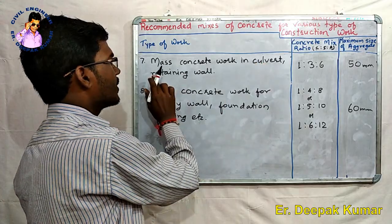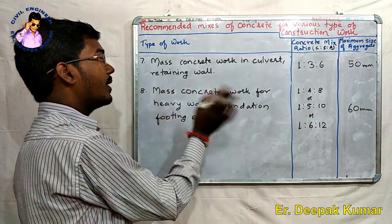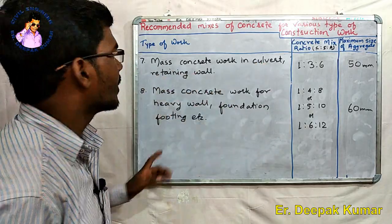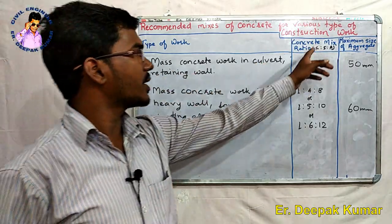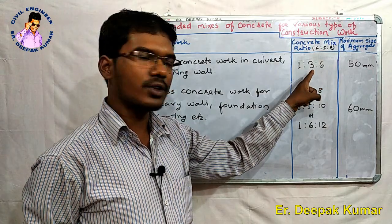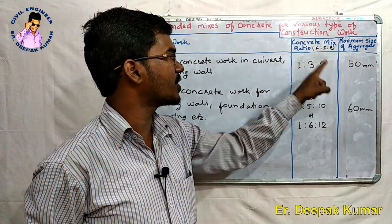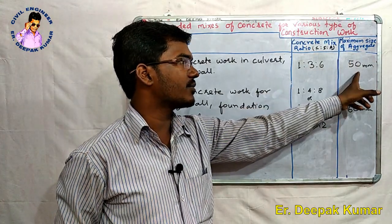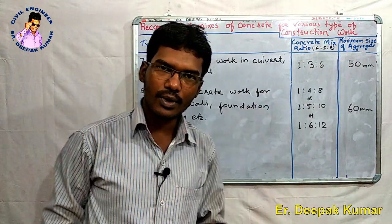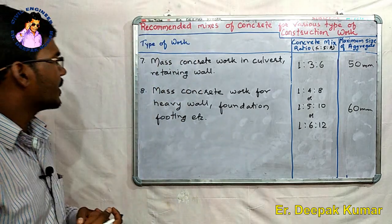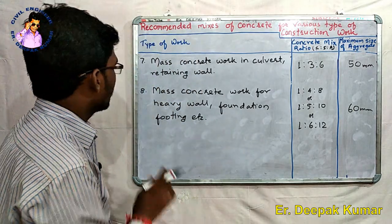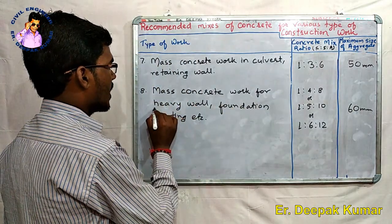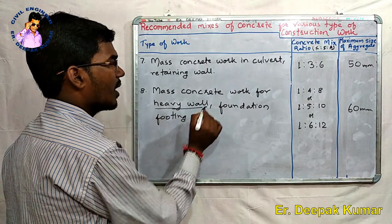The seventh type is mass concrete work in culverts and retaining walls. The concrete mix ratio for this is 1:3:6, and the maximum size of aggregate is 50mm.